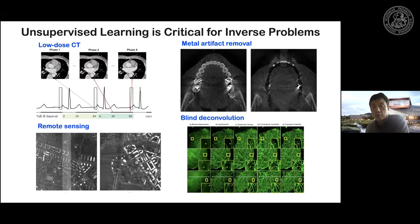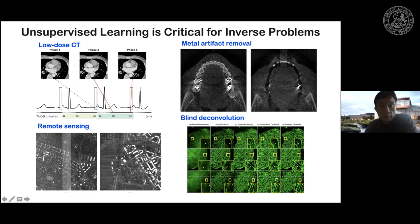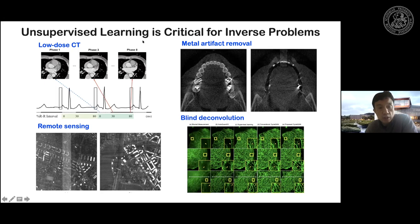Unfortunately, paired data situations are not common in medical applications. A more common scenario is that paired data is not available. For example, in cardiac low-dose CT, multiple phases of CT images are acquired at different phases of the cardiac cycle. Because of potential radiation dose, only one set or a small set of phases is acquired at full dose and the others at low dose. The goal is to use the high-dose images to improve the low-dose CT image quality.